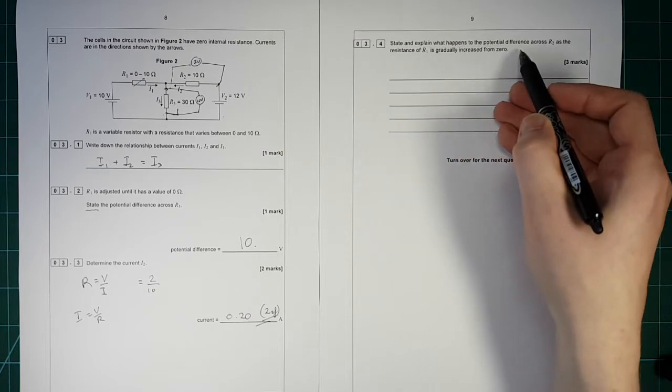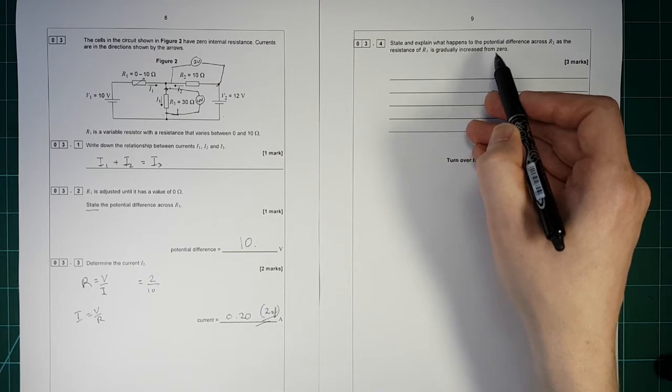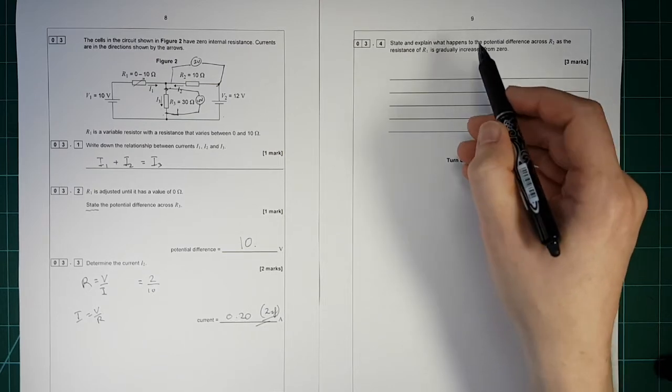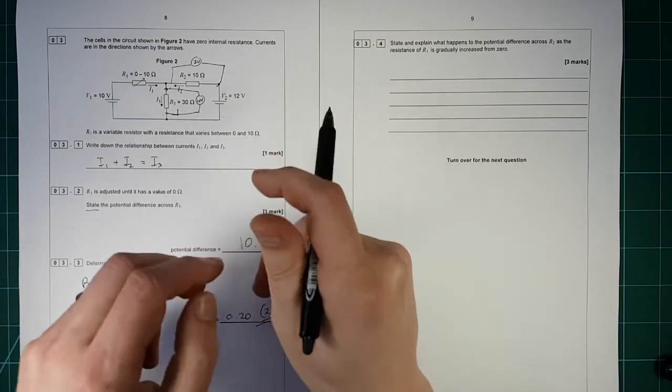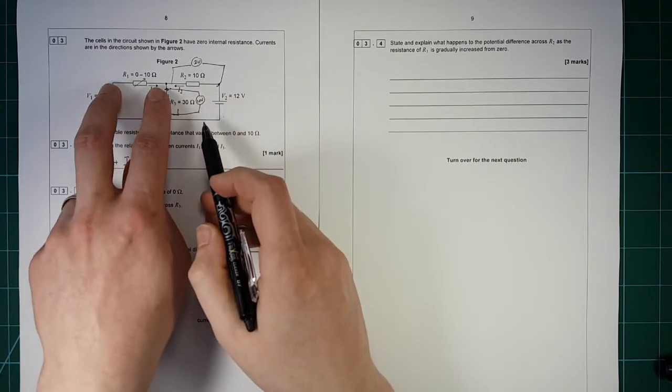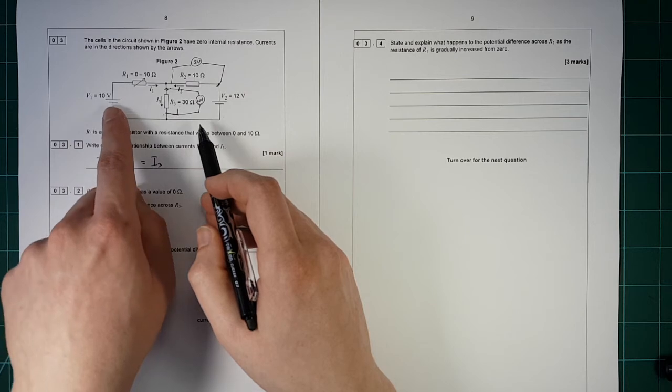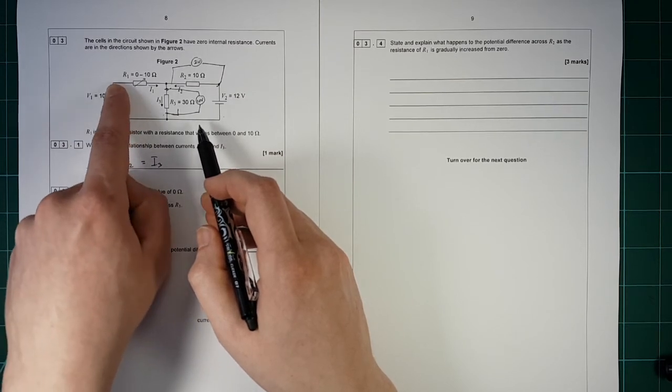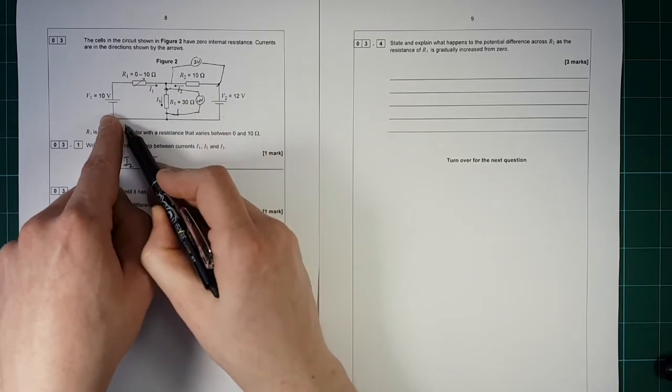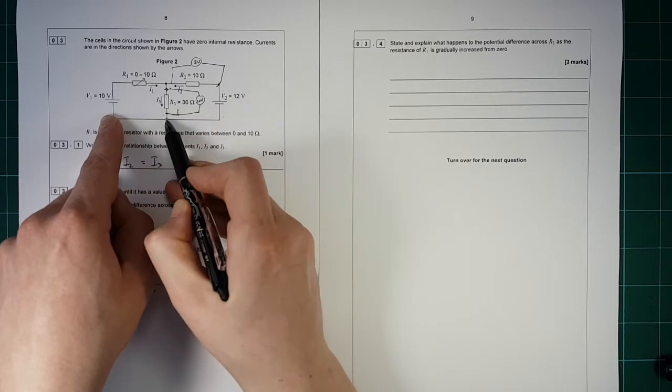State and explain what happens to the potential difference across R2 as the resistance R1 is gradually increased from 0. Right, what happens to the potential across here? Okay, so if we increase this resistance here, then we're going to have the same potential across here, but now it's got to split. In order to get around this loop here, it's got to split. Some of it will be across here, some of it will be across here.